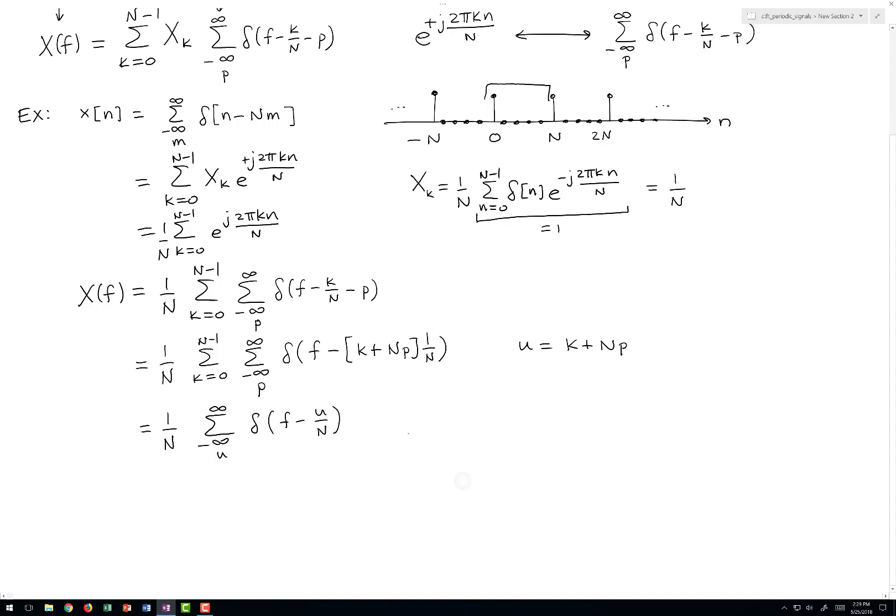Let's draw a picture of that. These are Dirac delta functions. So whereas we started in the time domain with Kronecker delta functions, in the frequency domain we have Dirac delta functions.